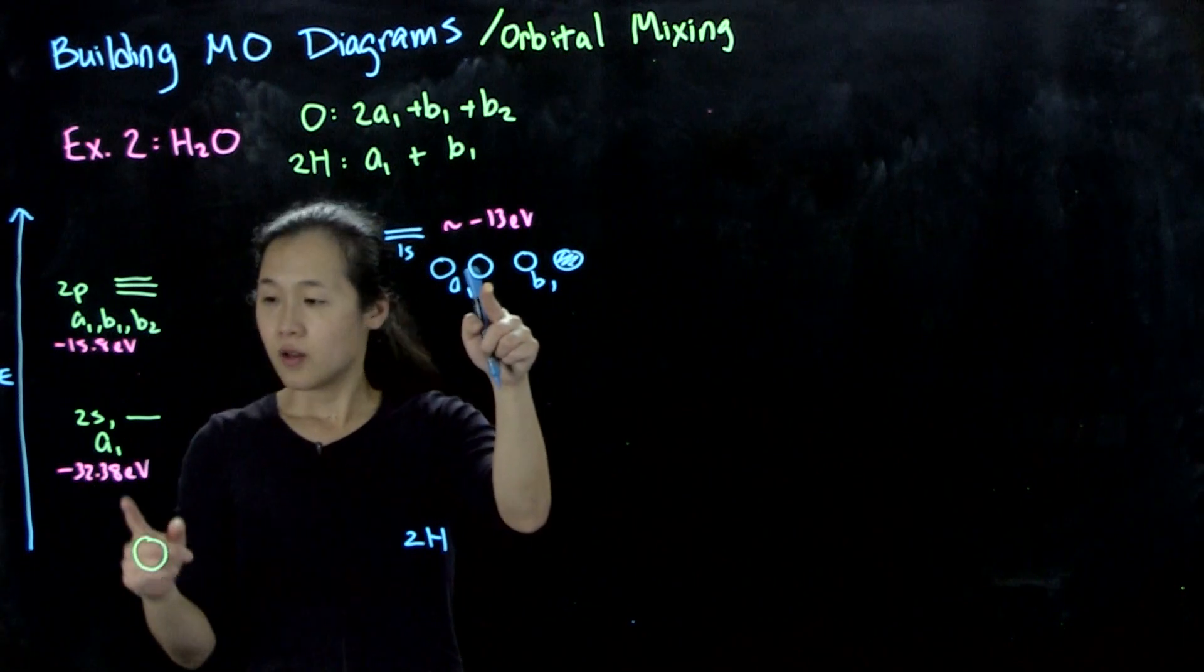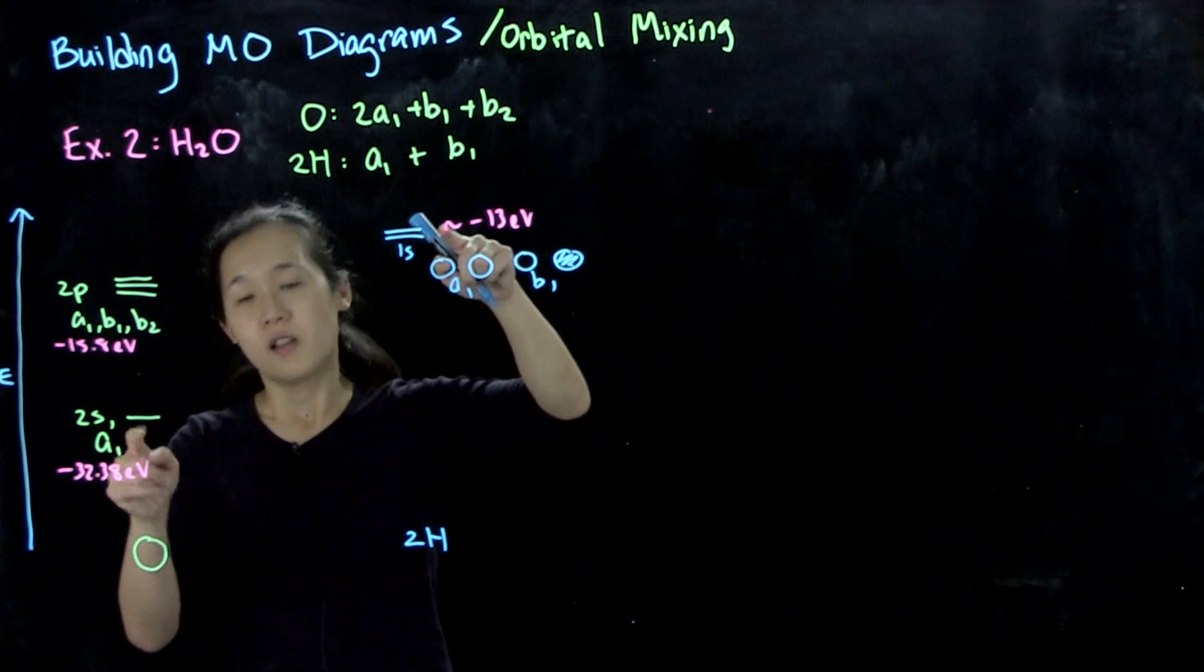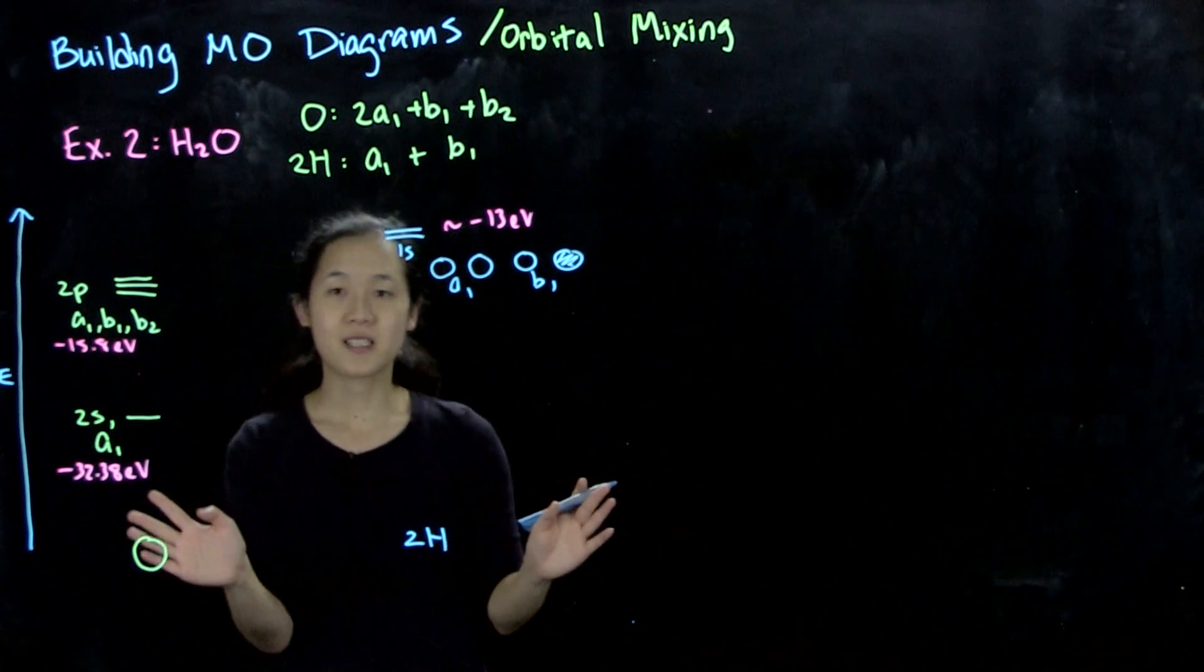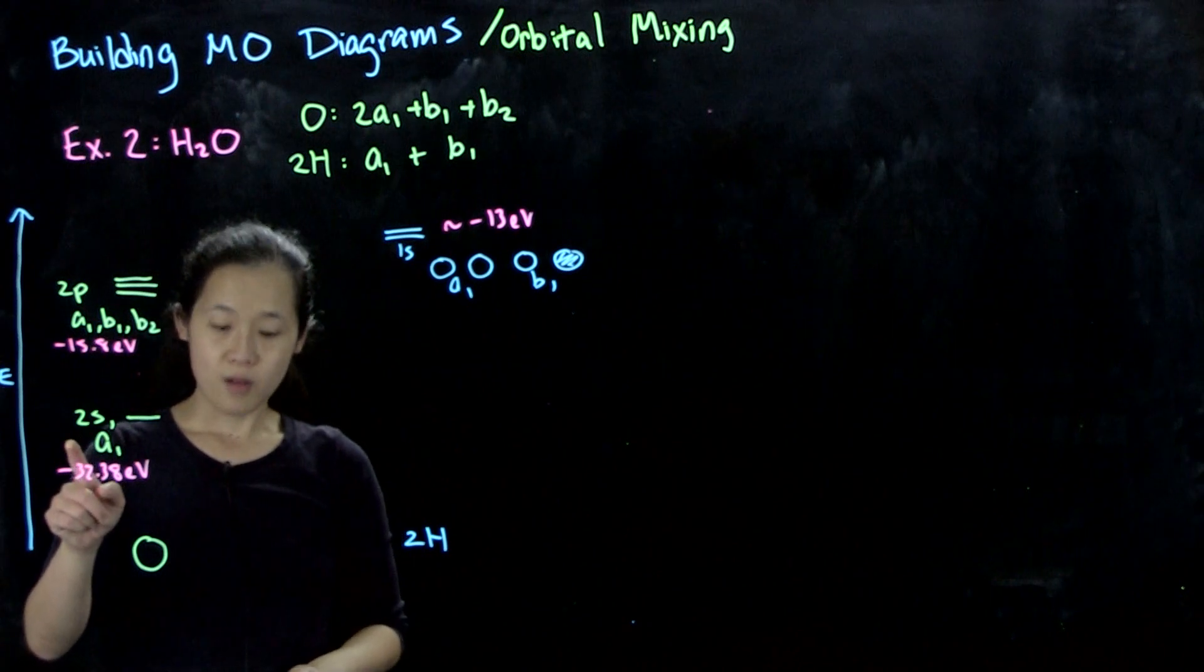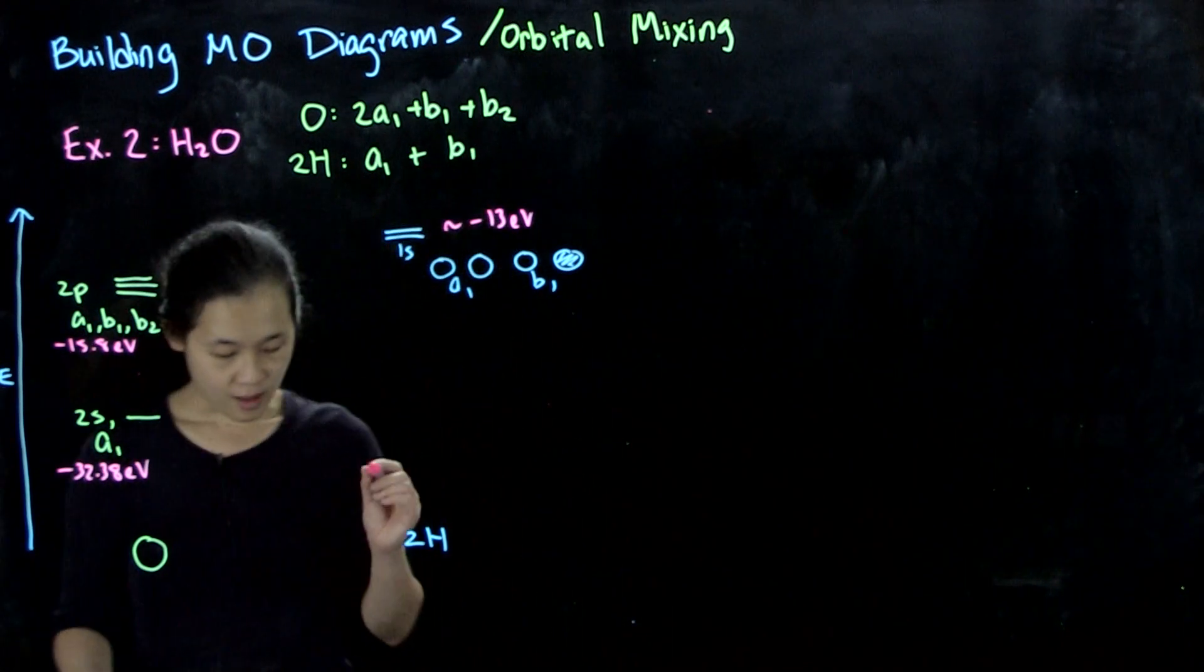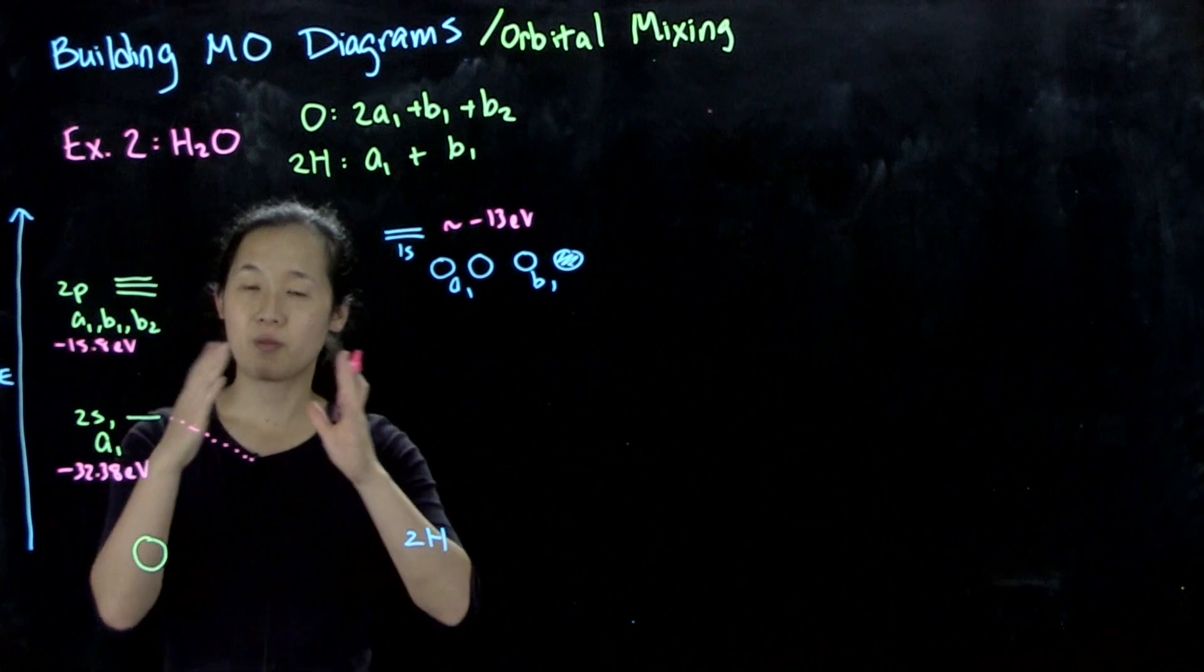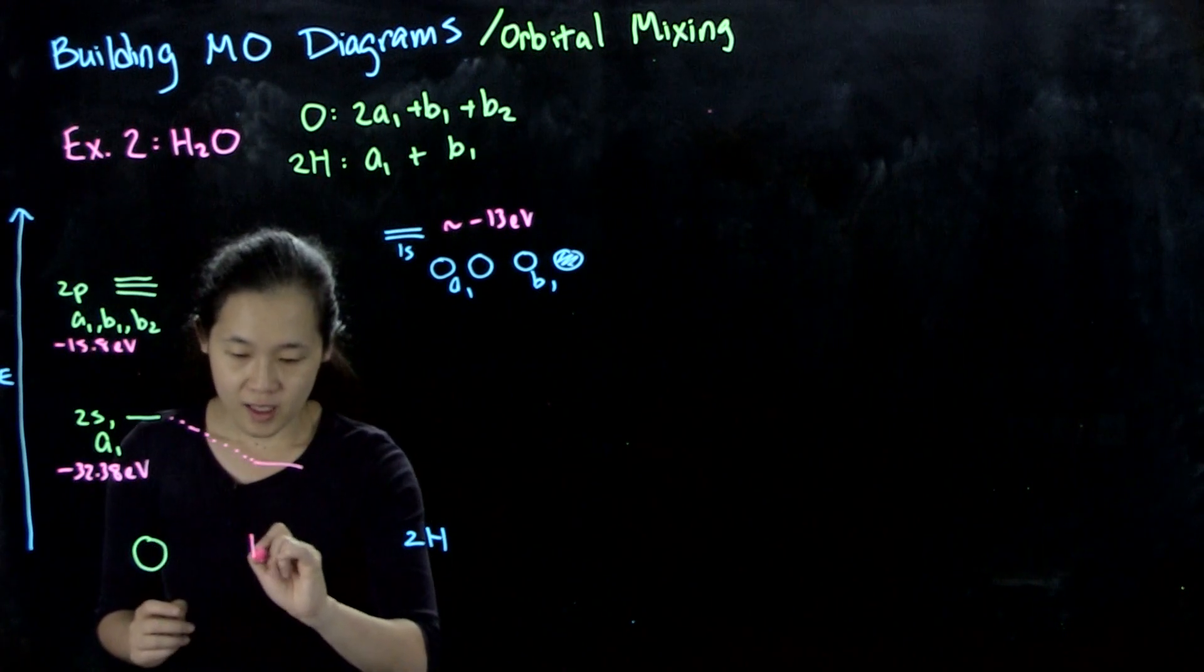Orbitals of the same energy and greater overlap interact more strongly, which means their resulting combinations will be stabilized and destabilized in a greater magnitude respectively. For example, this first a1 interaction with this s orbital - they're very far apart in energy, so this interaction will be weaker than the a1 interaction with this p orbital here. Let's get started.